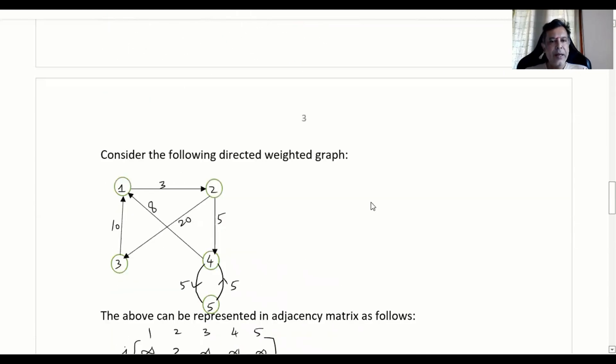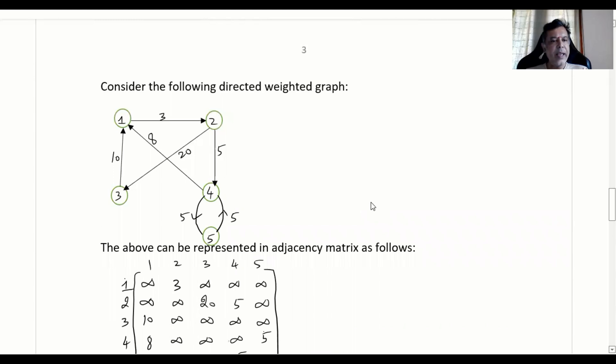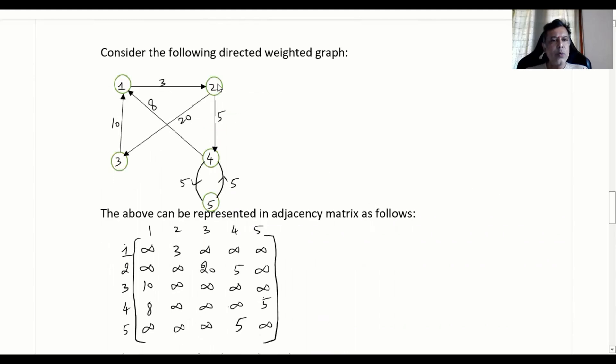This is a directed weighted graph. Here again, it will be similar except that 1 to 2, it is 3. So you specify 1 to 2 as 3, whereas there is no direction from 2 to 1 that is specified as infinity. Otherwise, it remains the same. Whereas if you look into this, there is a route from 4 to 5 also, 5 to 4 also, and both are having weights 5 only. So 4 to 5 is 5 and even 5 to 4 is also 5.